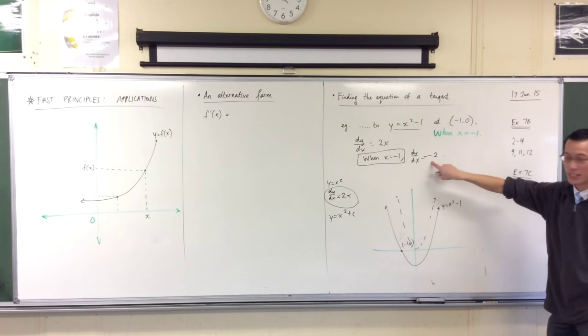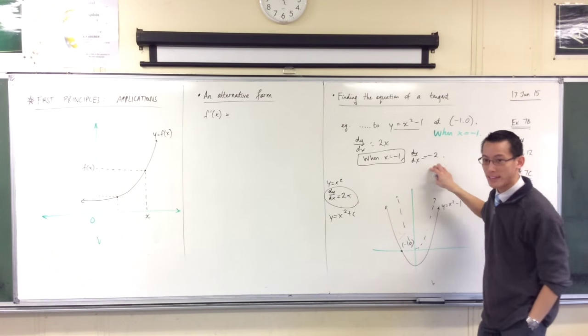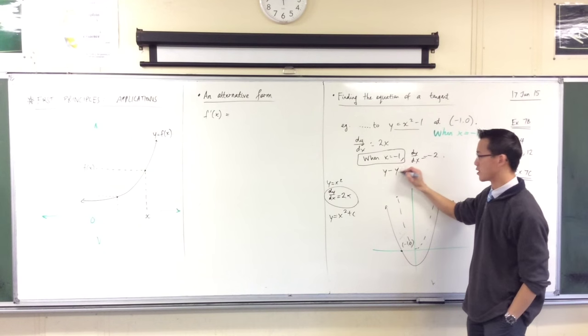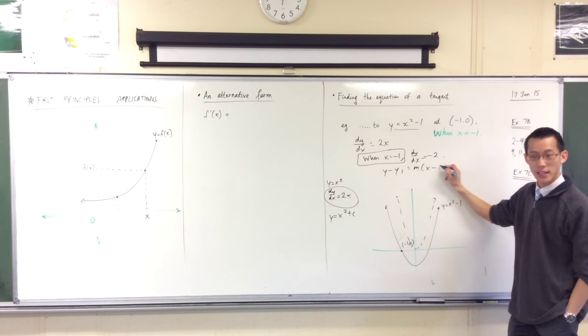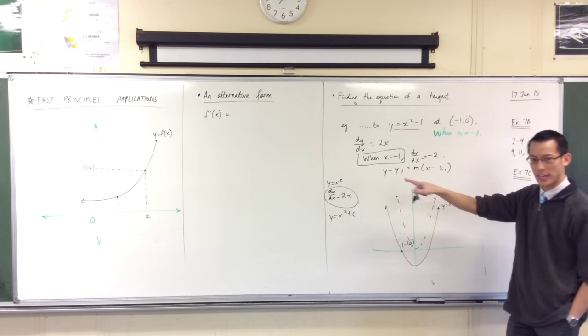Got a point, got a gradient, think back to linear functions, what am I going to put it into? Gradient form. Point gradient form, right? y minus y1 equals m times x minus x1. And from there, it's just a substitution. Let's just quickly do it together.